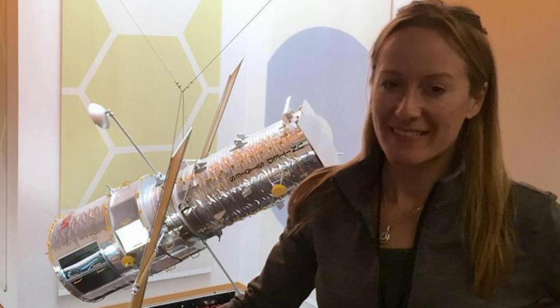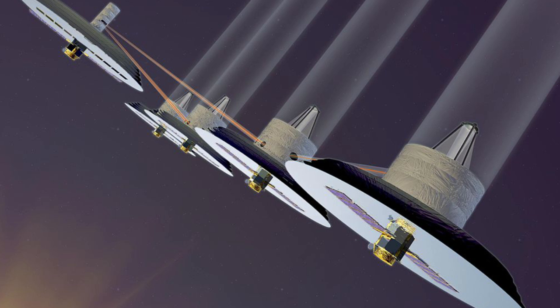In February 2006, Margaret Turnbull, an astrobiologist at the Carnegie Institute, listed five stars she felt best suited for the Terrestrial Planet Finder, a gargantuan array of space telescopes that would be able to directly image Earth-sized planets around sun-like stars.